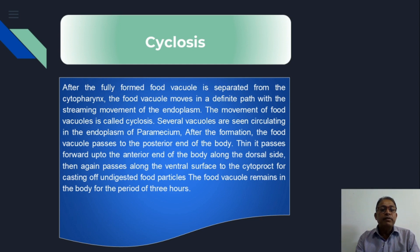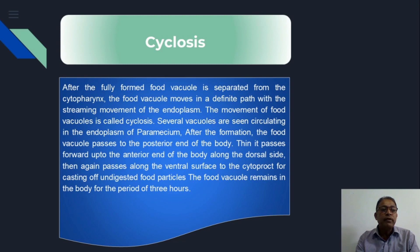After the formation of the food vacuole, it passes to the posterior end of the body. Food within the food vacuole gets digested as it passes along the rotary streaming movement of endoplasm — forward to the anterior end, then dorsal side, then ventral surface, and then towards the anus, that is the cytoproct, for elimination and casting out of undigested food particles.